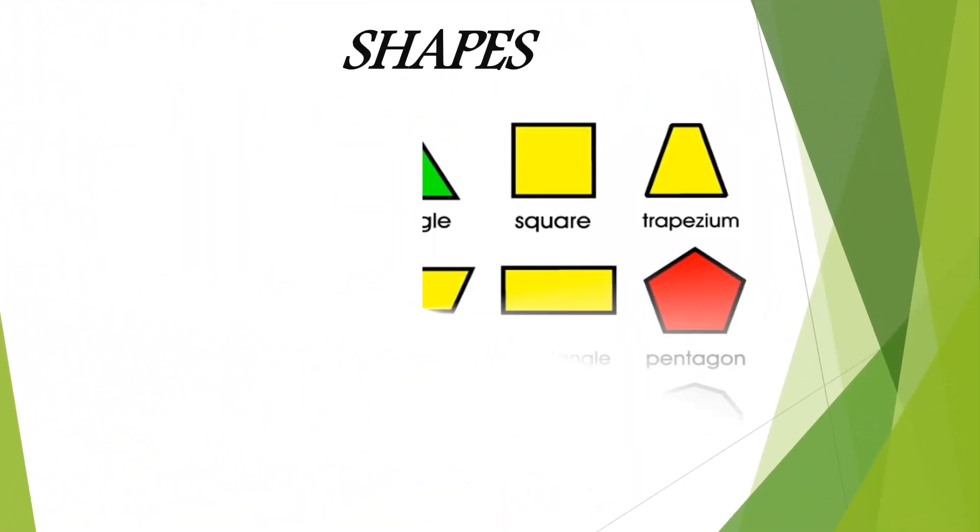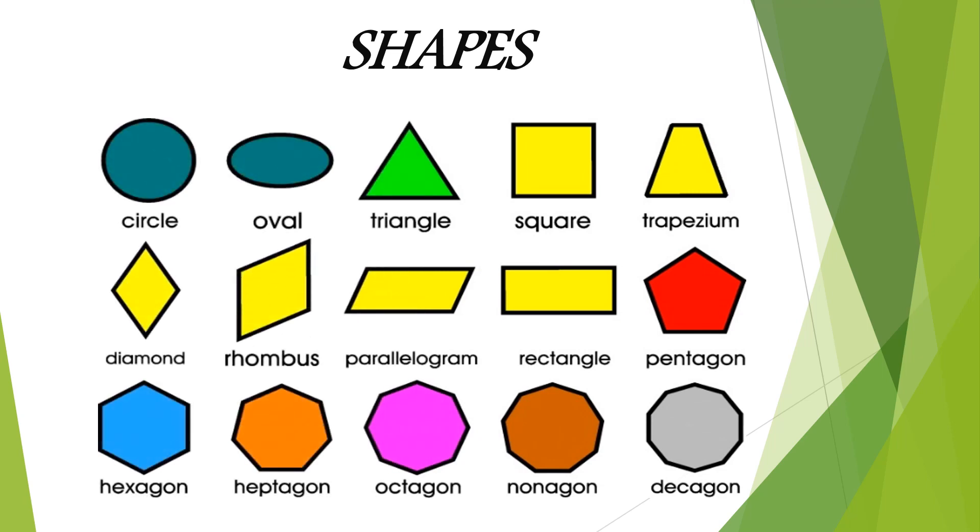Here are different types of shapes: circle, oval, triangle, square, trapezium, diamond, rhombus, parallelogram, rectangle, pentagon, hexagon, heptagon, octagon, nonagon, and decagon.